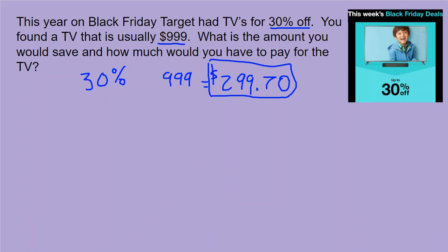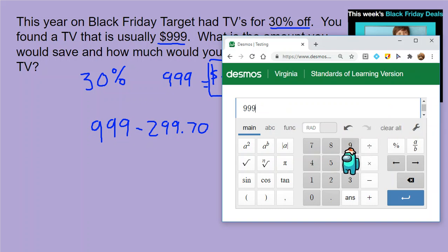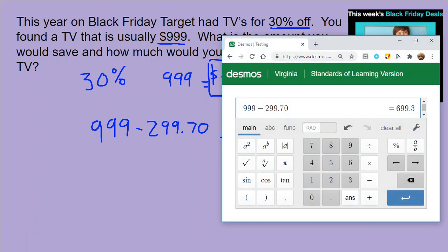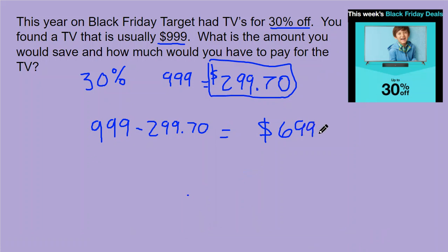We need to find out how much we're going to pay for the TV. Discount is how much we're saving, so I'm going to take the original amount — $999 — and subtract $299.70. I can put that into my Desmos calculator: $999 minus $299.70 gives me $699.30. That is the price of the TV after the discount.